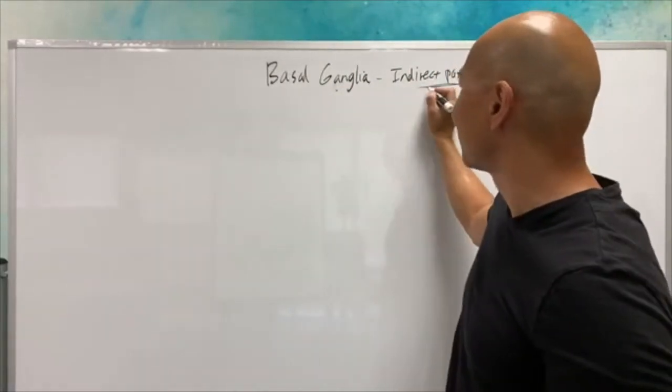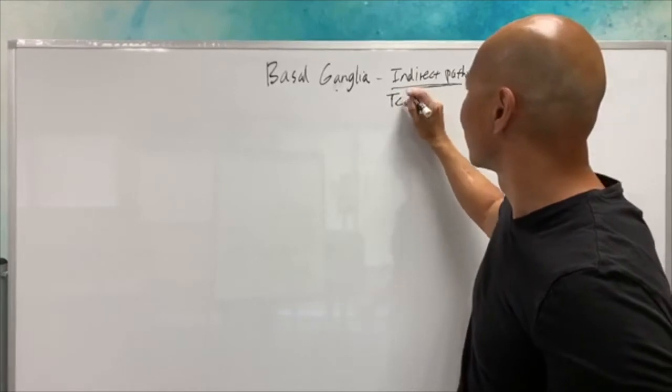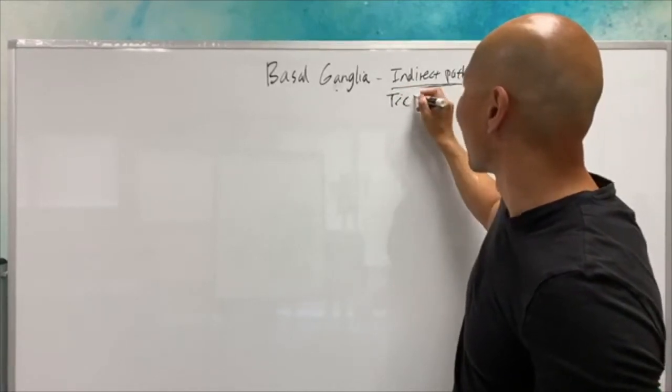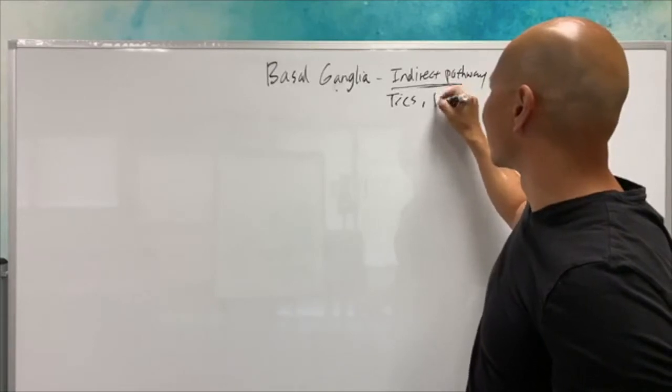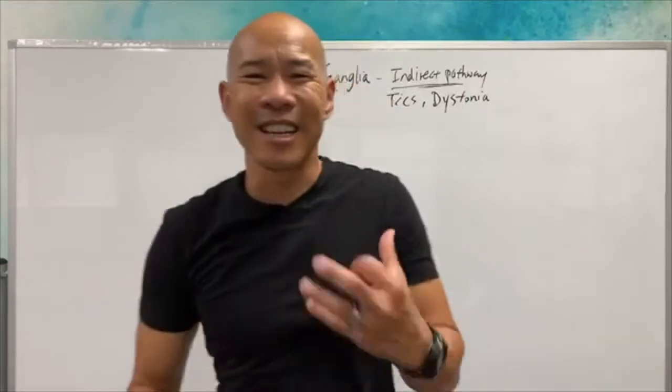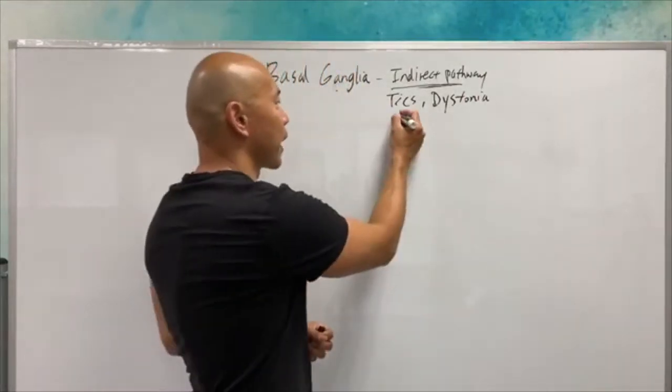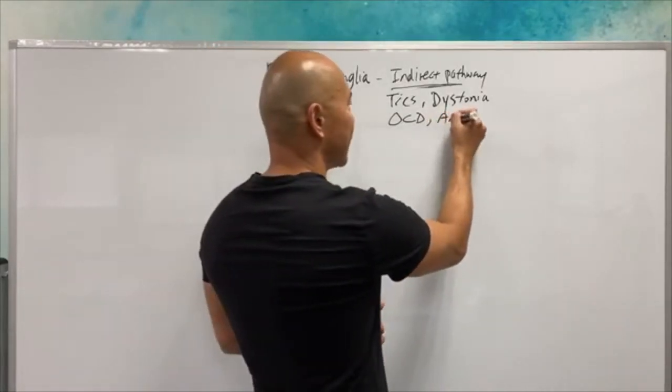Now some of the symptoms that can come from this, as I mentioned earlier, you might have tics where you have this movement. You may have dystonia, which is like the stiffness or tightness in your muscle. You may have OCD, obsessive compulsive disorder. You may have anxiety.